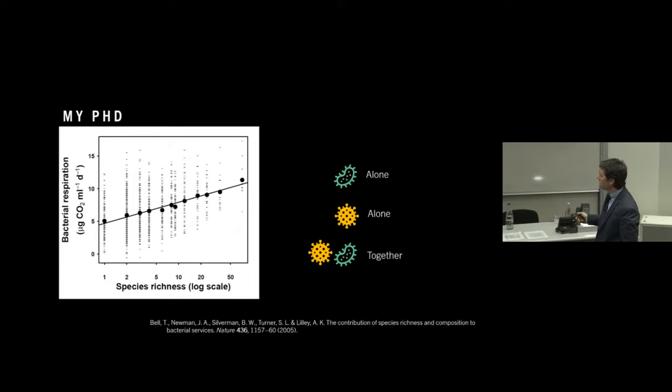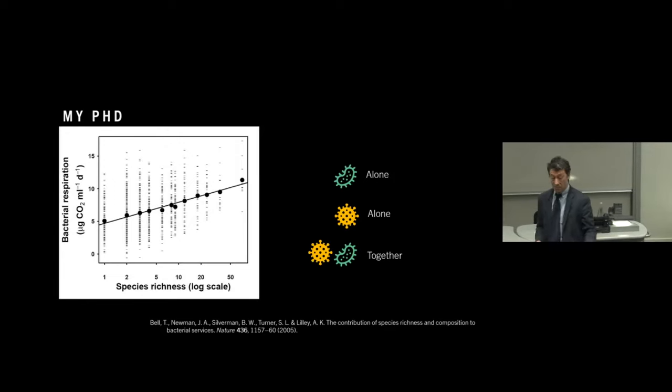The black dots here are the average at each level, the mean at each level of species richness, and you can see that there's a very predictable outcome. As you increase the number of species, you get, on average, more and more respiration that's coming off of them. So that's the pattern. You'll notice a few other things that this isn't an arithmetic scale on the x-axis. It's called a logarithmic scale, which means that the numbers get further and further apart as you go along this axis.